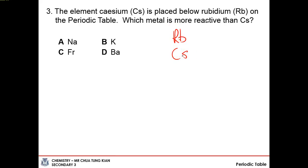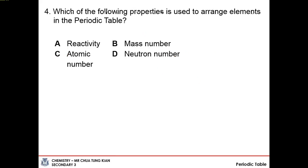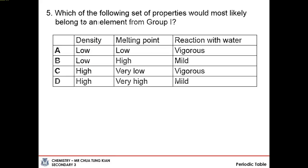Which metal is more reactive than cesium? Since reactivity increases down group 1, the metal more reactive than cesium would be right at the bottom of group 1. Which property is used to arrange elements in the periodic table? Quite obviously, it is the atomic number. Which properties would most likely belong to a group 1 element? Group 1 elements have low density — in fact, the first three can float on water.